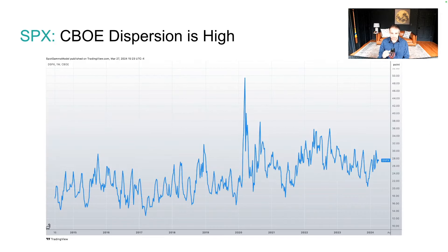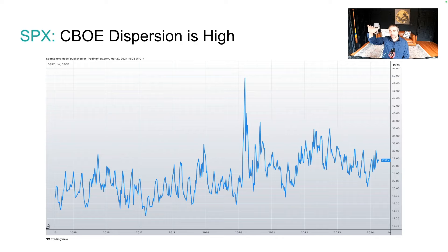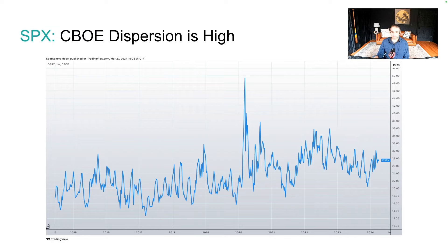Let's turn to dispersion. The CBOE dispersion index measures how much the individual components of the S&P 500 are moving relative to each other. High dispersion means you're getting individual stocks making big moves — semis, financials, energies moving a lot more than other index components.